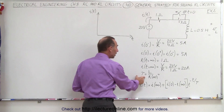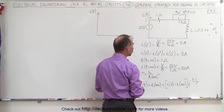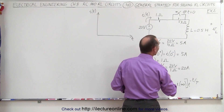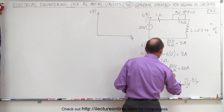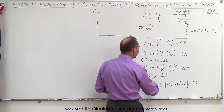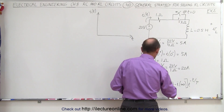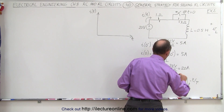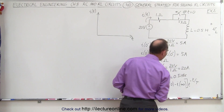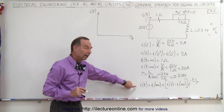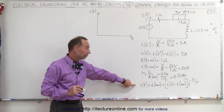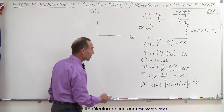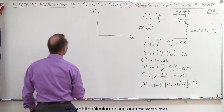The time constant is the inductance divided by the total resistance after the switch opens up, so this will be equal to 0.5 henries divided by the total resistance of 1 ohm, which is equal to 0.5 seconds — a half-second time constant. Now we're ready to find the current in the circuit, which is the same as the current through the inductor, by using this equation right here.